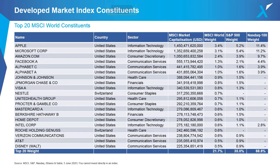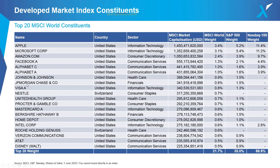Although this list is dominated by US companies, the reality is that these are global companies serving customers worldwide. Running through the list, about 75% of the companies I've had direct interactions with or consumed their products — if you're using WhatsApp, you're using Facebook; we all use Google, which is Alphabet; if you own an Apple device, you're using their products. It really speaks to the global nature of these companies, even though they're classified as US-domiciled.